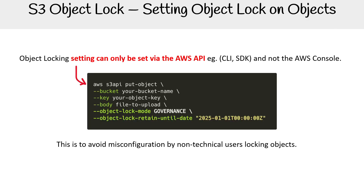In terms of how to set an object lock on objects, you can only do this via the AWS API — so either the CLI or the SDK. With a put object command, you would set some flags. There are a few different ways of locking objects and different modes, but it's important to remember it's only through the AWS API; you cannot do it through the console.